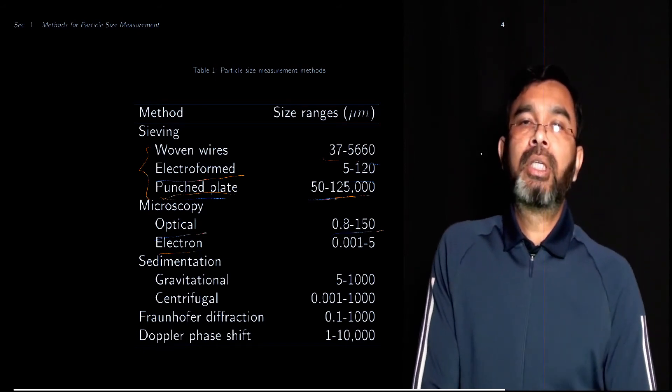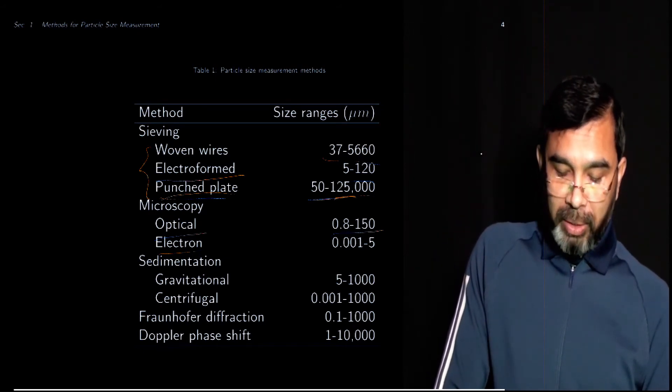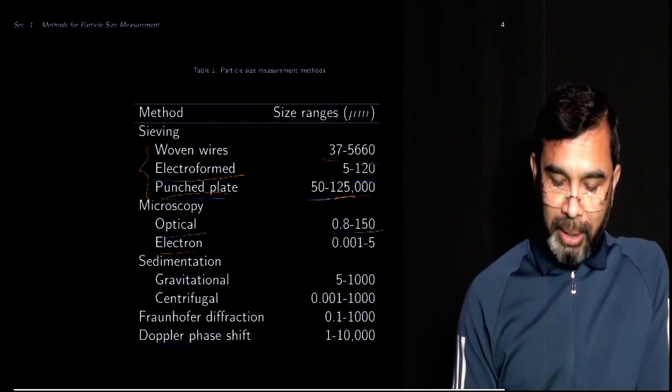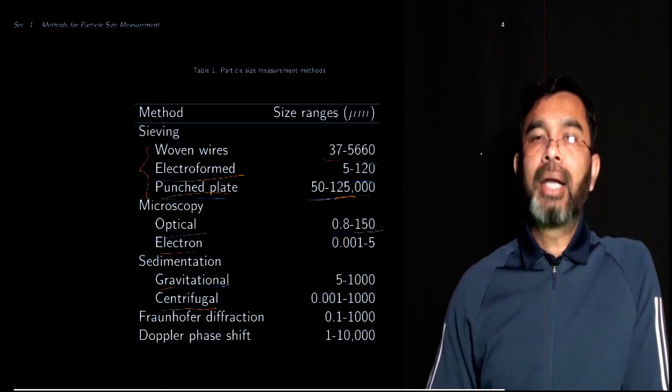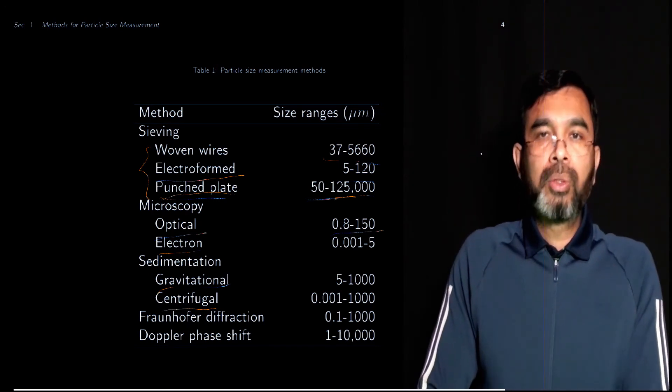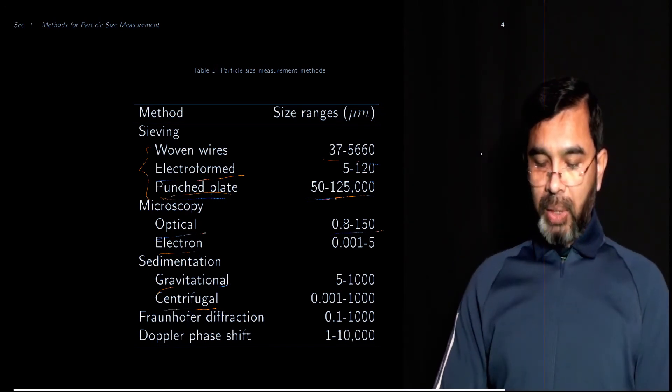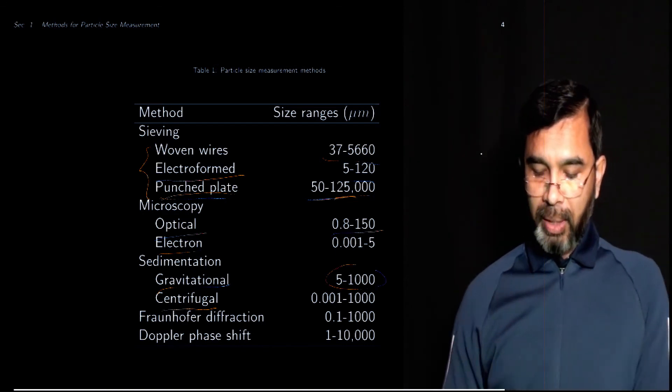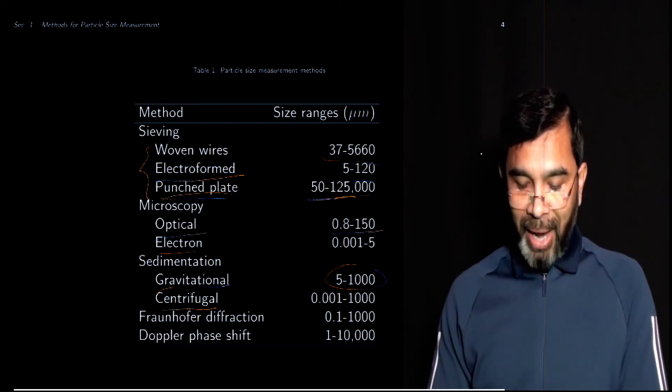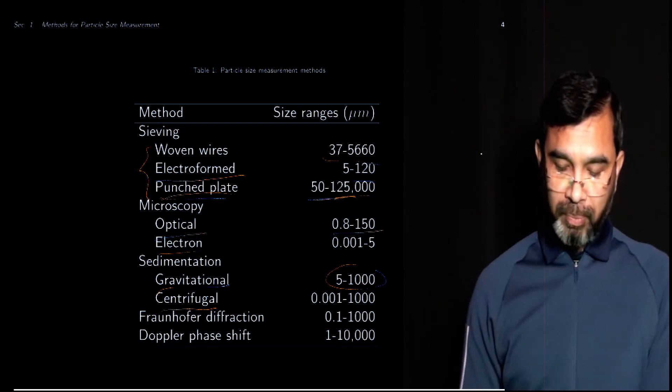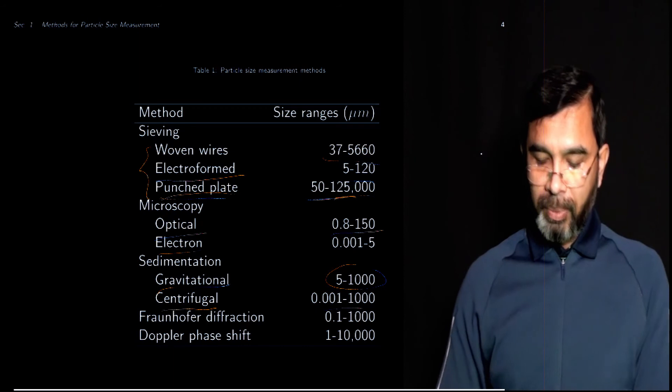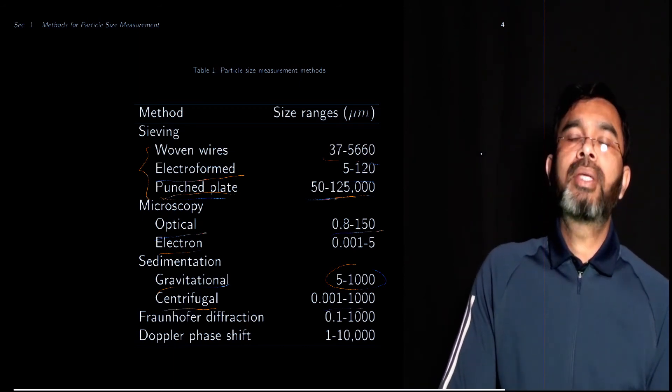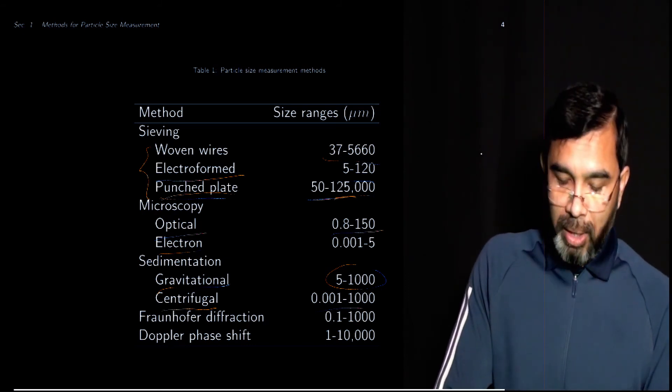Sedimentation is one of the dynamic methods, and it can be done either using gravitational force or centrifugal force. Using gravitational force we can separate particles or measure particle size between 5 microns to a millimeter, and using centrifugal force we can measure even particles as small as 0.001 microns.